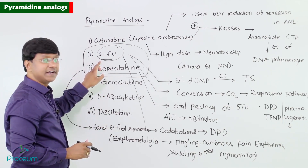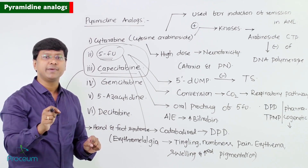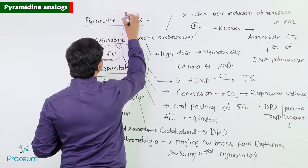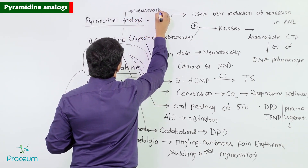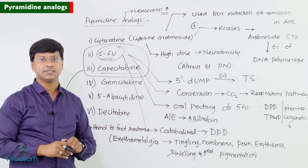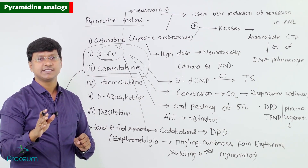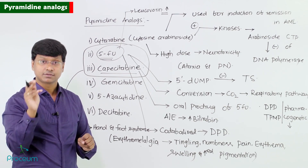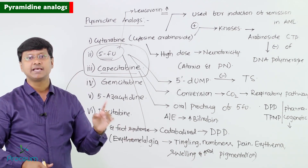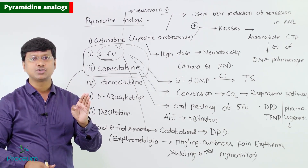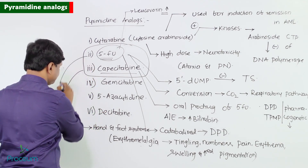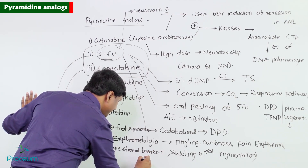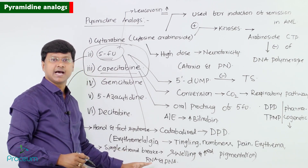There is a substance which will augment the action of 5-fluorouracil, and that is Leucovorin. Leucovorin augments the action of 5-fluorouracil. Also, 5-fluorouracil causes single strand breaks and thus affects both DNA and RNA.